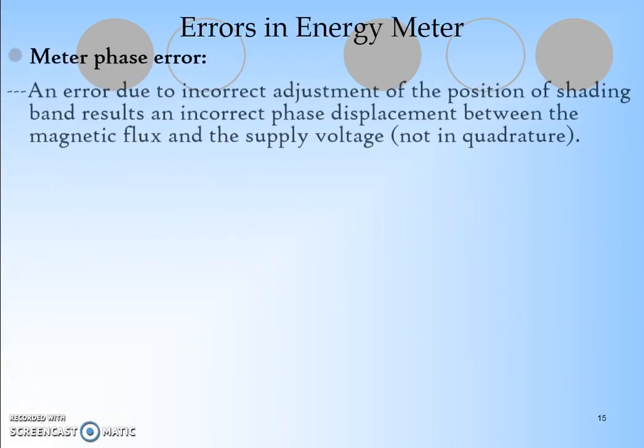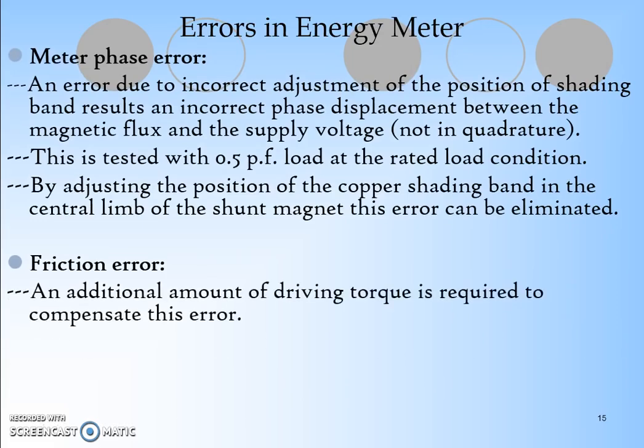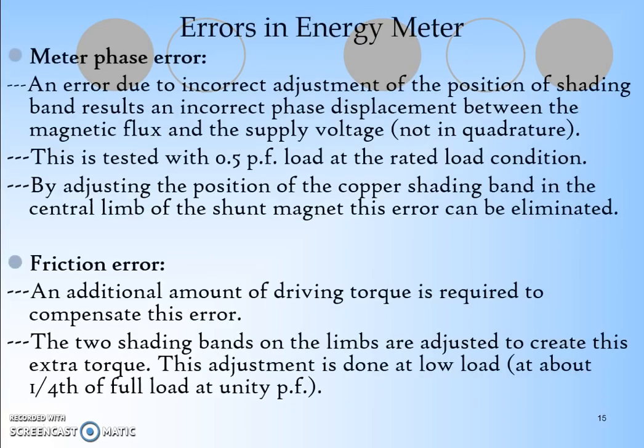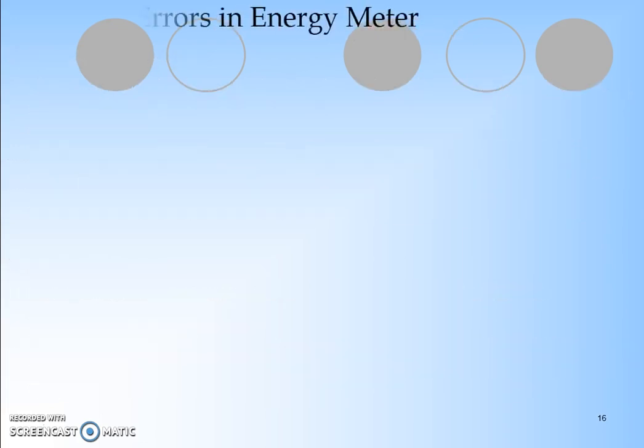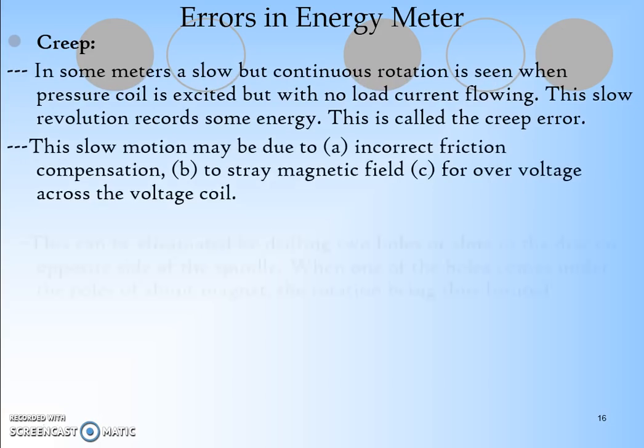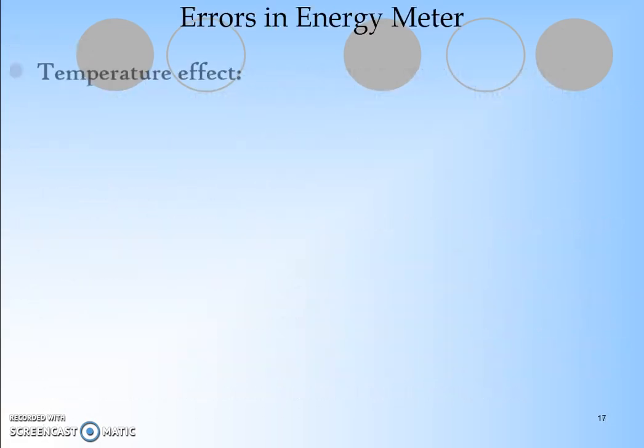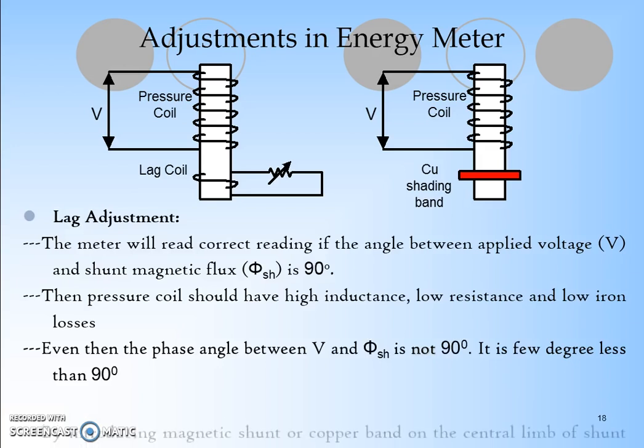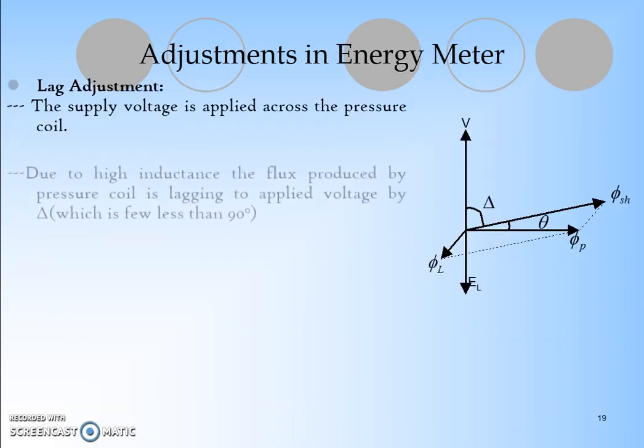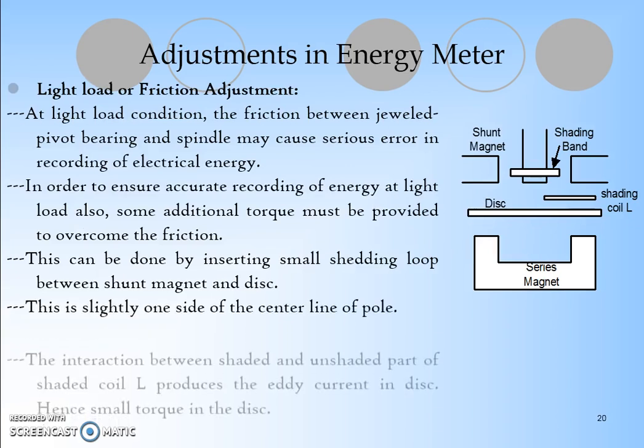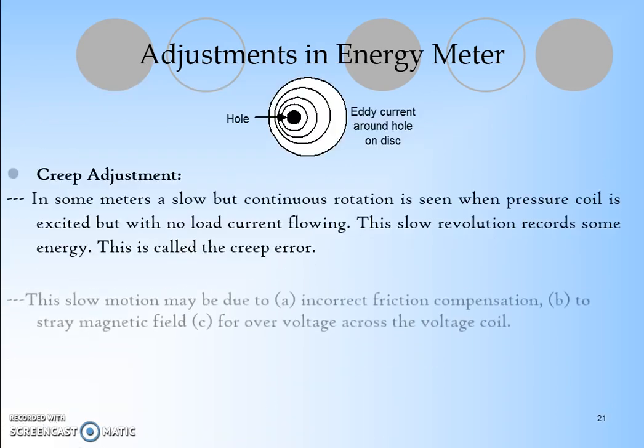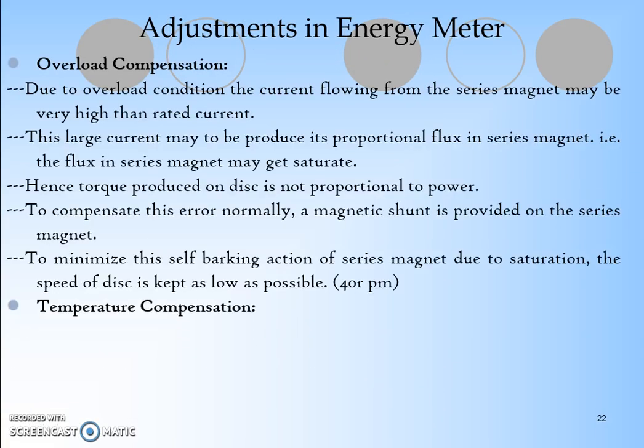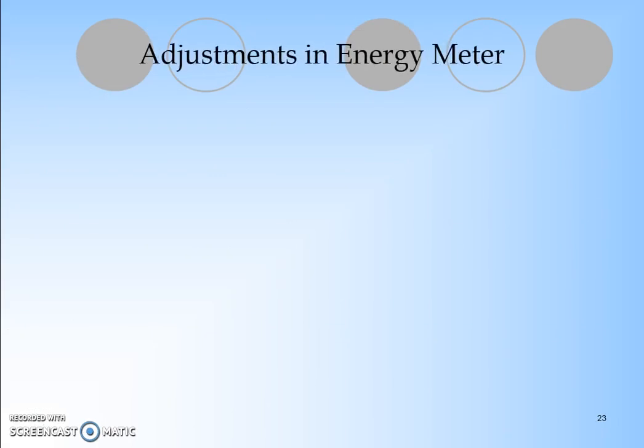There are other errors: meter phase errors, friction errors depending on how much weight we add. Creep is another type of error, and there are also errors due to variations in temperature. There are light load and friction adjustments. Creep can be avoided by providing a hole in the disc. These are the main constructions, working, and errors in the energy meter.